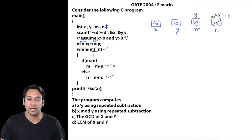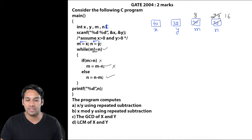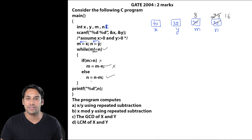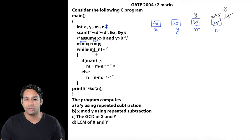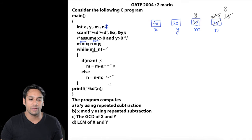We go back to the while loop again. The value of m is 8 and n is 16, m is not equal to n so we come inside. The first statement is not executed because 8 is not greater than 16, so we execute the else condition: n becomes 16 minus 8 which is 8. Now again we come to the while loop: the values of m and n are both 8, so both values are equal, therefore we come out of the while loop and we print the value of n, which is 8.